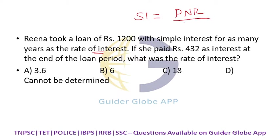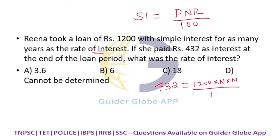Simple interest is 432, which equals: principle is 1200, and since n and r are the same, we put n × n (that is n²) divided by 100. So 432 = 1200 × n² / 100. Simplifying by cancelling 100, we get 12 × n² = 432.